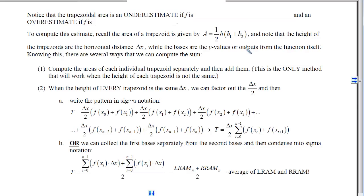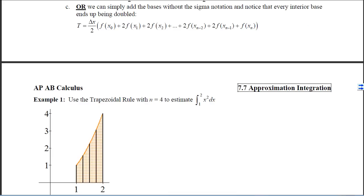The trapezoidal area is an underestimate if f is concave down and an overestimate if f is concave up. We can compute the areas of each trapezoid individually and add them — this is the only method that works when the height of each trapezoid is not the same, so it's appropriate when you have tables of data that are not equally spaced. When the height of every trapezoid is the same, we can factor out delta x over 2 and write it in sigma notation, or we can note that every interior base ends up being doubled: delta x over 2 times the first base, 2 of each interior base, and the end bases just once.